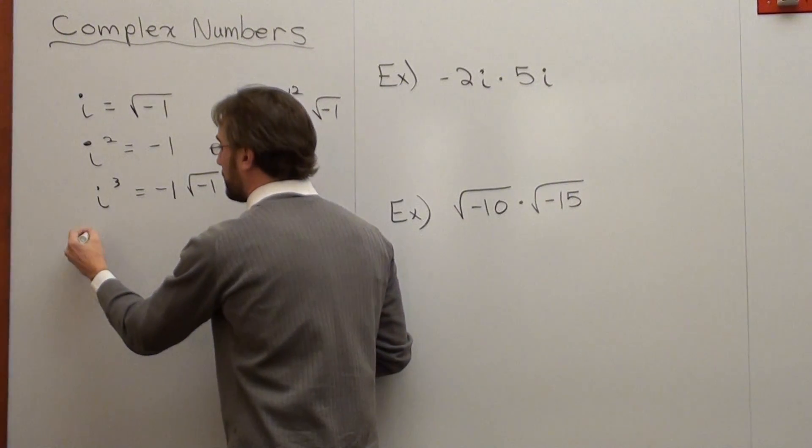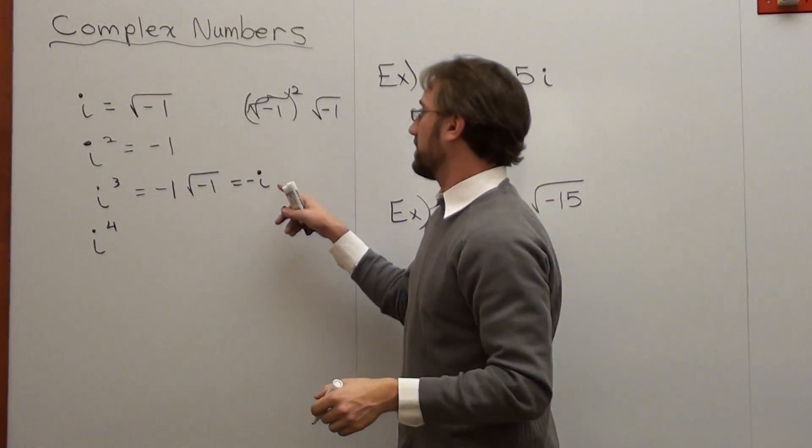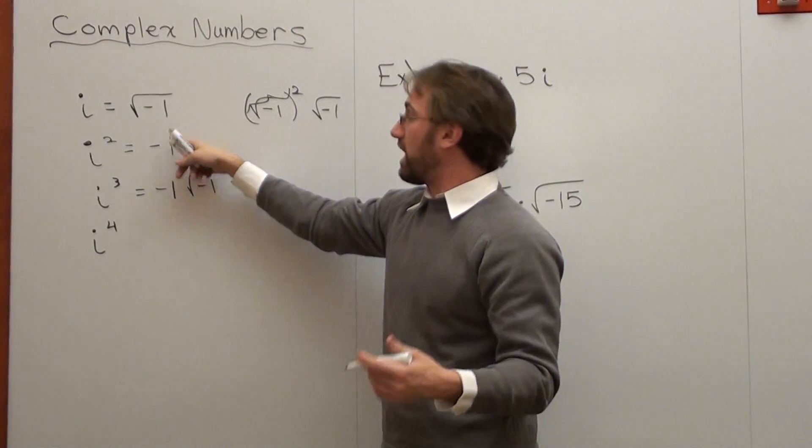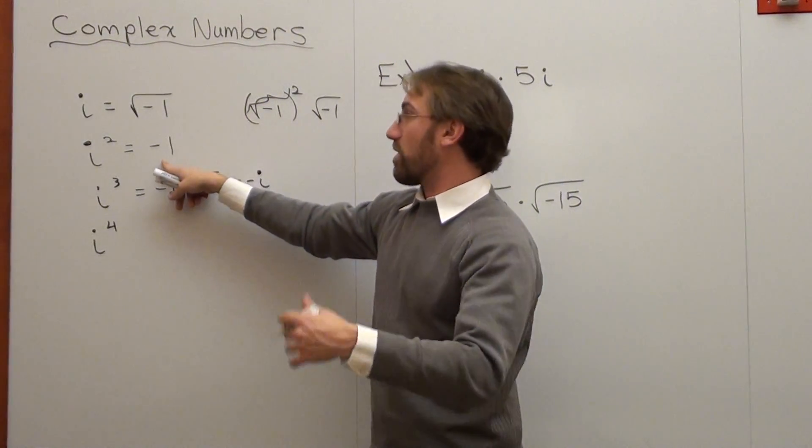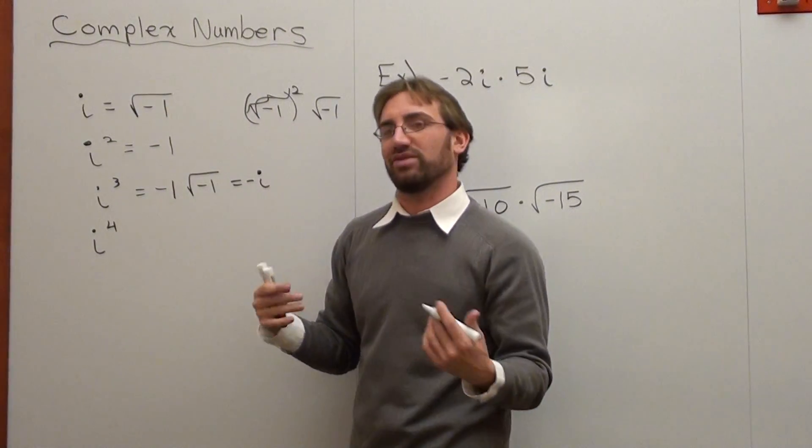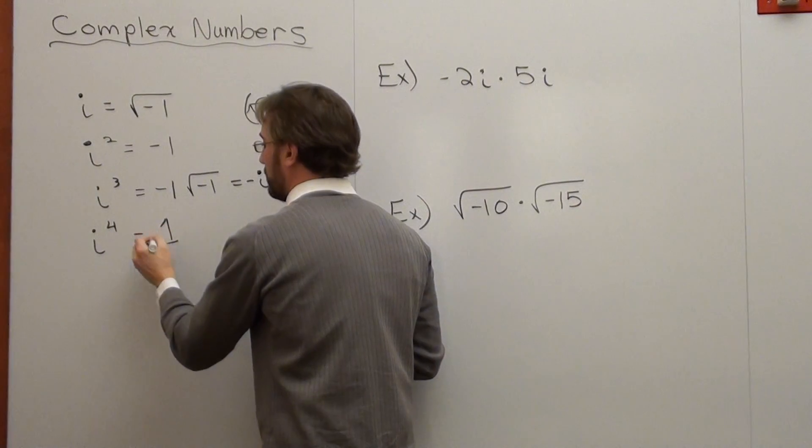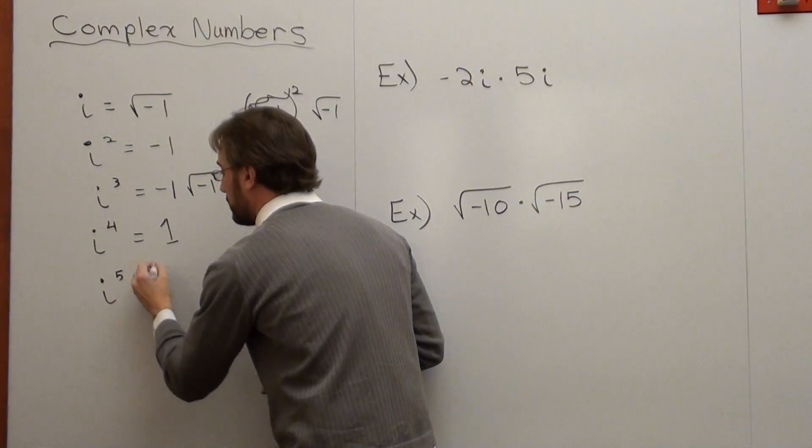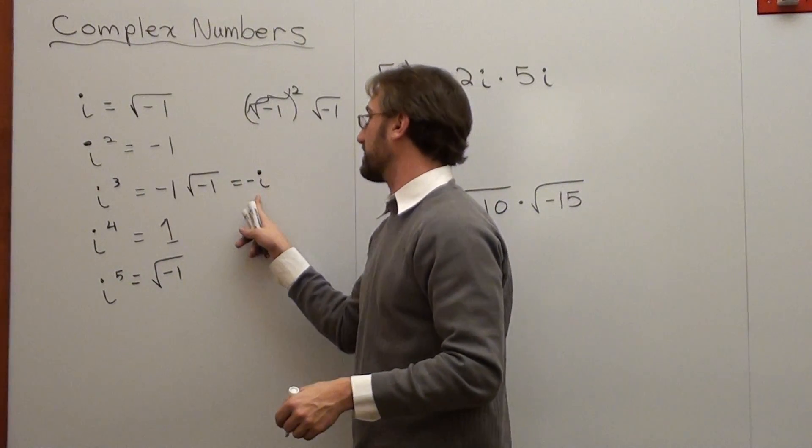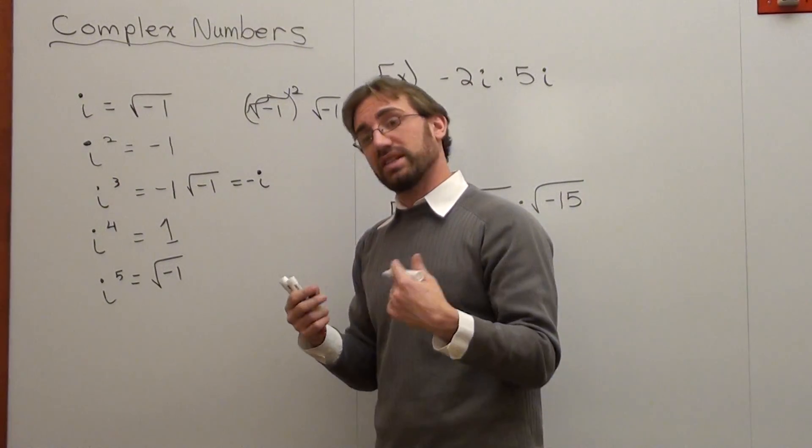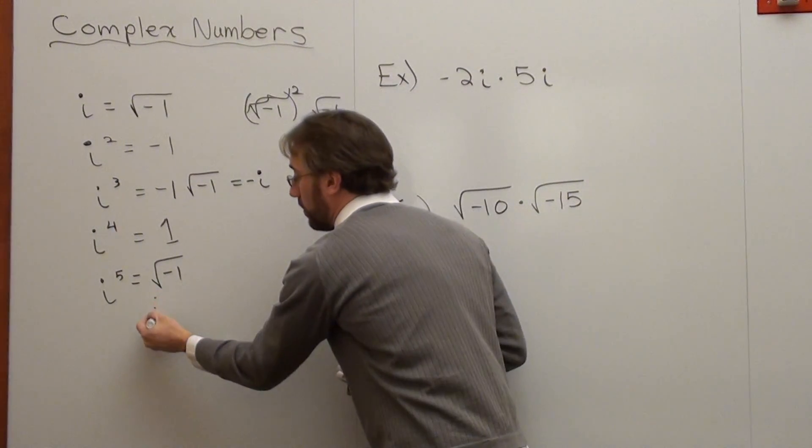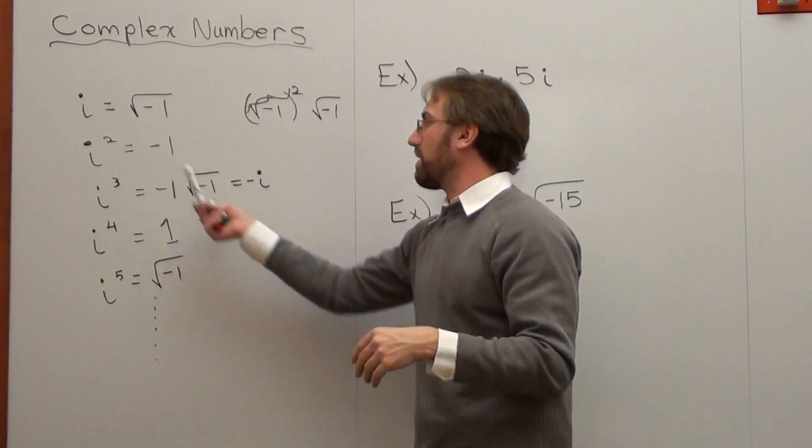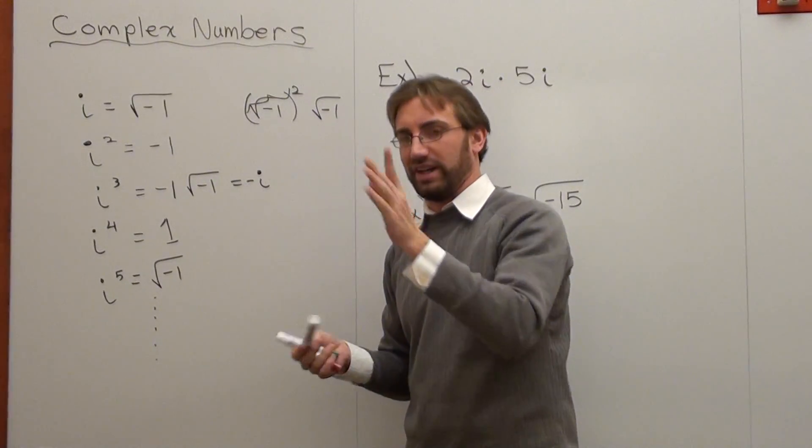And then i to the fourth is this times this times this times this four times. But if you want to make it even easier, it's just i squared times i squared. So it's negative one times negative one, which is equal to one. And that's the definition of it. And then i to the fifth is the square root of negative one, i to the sixth is negative one, i to the seventh is negative i, i to the eighth is one. It repeats in cycles of four. Using that little bit of information, which is something that you should memorize, at least the first four. The other ones you just divide out.